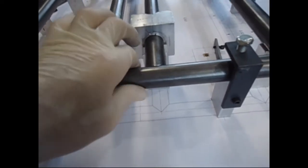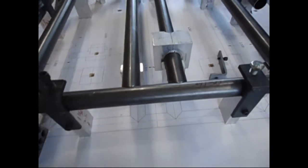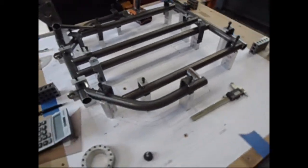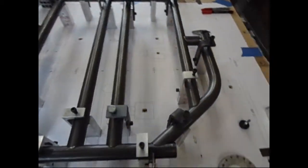These tubes are all inch and an eighth by 065 wall chromoly, and I get most of my chromoly from Wicks Aircraft. They have a pretty good selection of chromoly tubing.